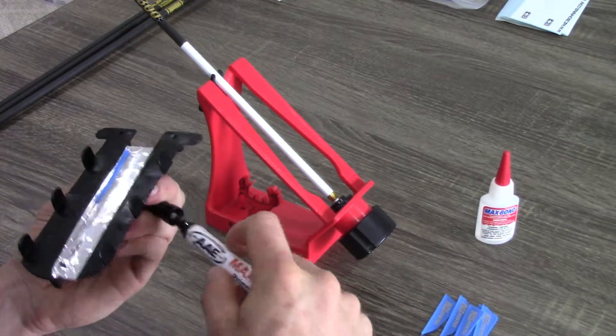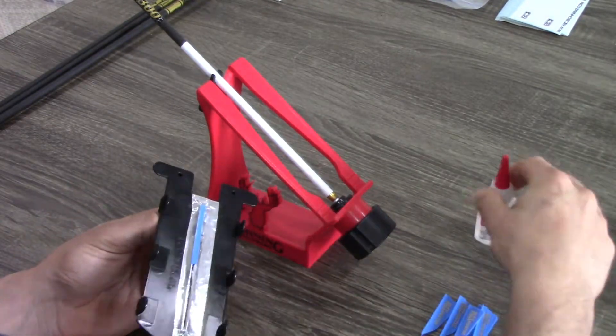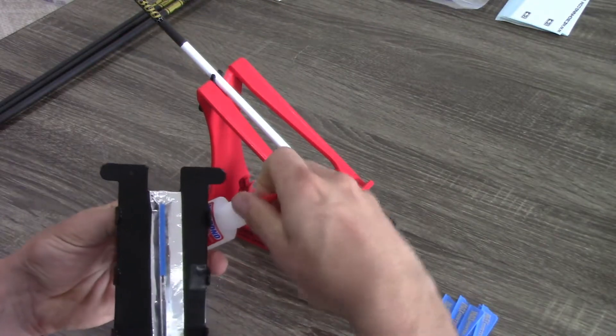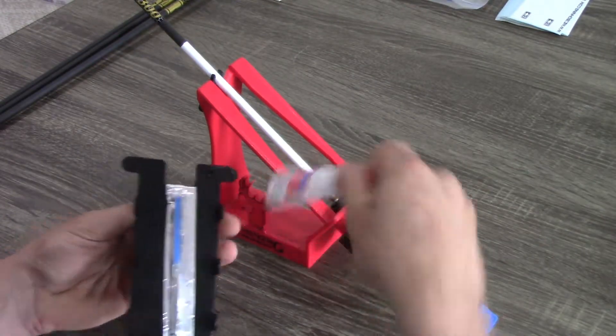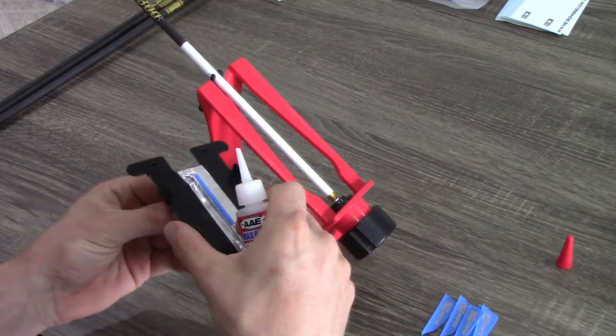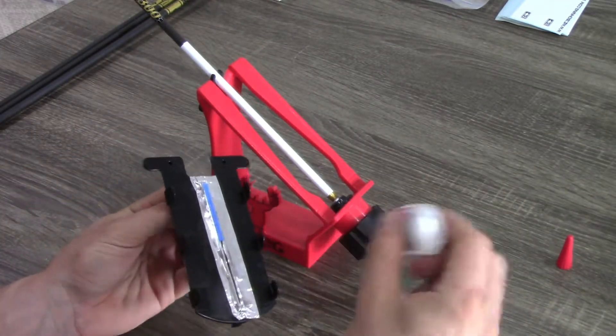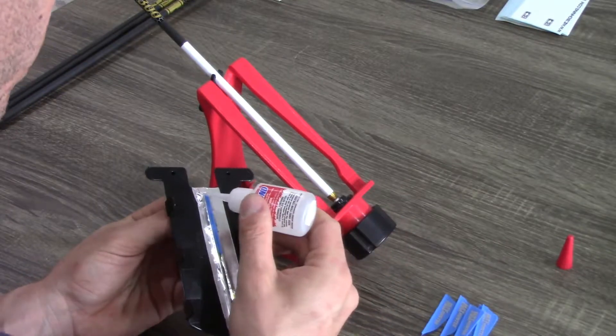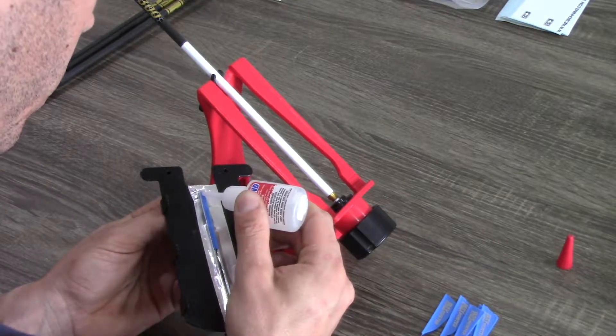I'm going to let this dry for just several seconds, and then I'm going to put a thin bead of the AAE Max Bond Glue. Again, this glue is recommended for these veins. I know a lot of people like to go with just a Loctite Super Glue, but I just wanted to get the best adhesion I could. I didn't want to have veins coming off.